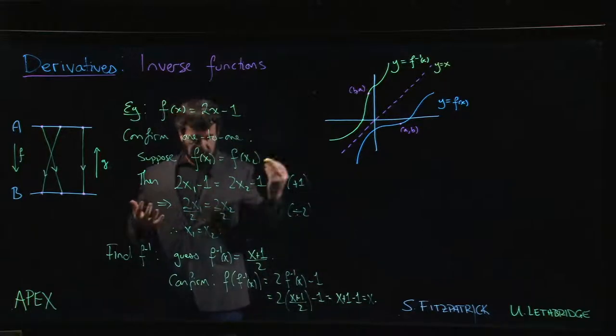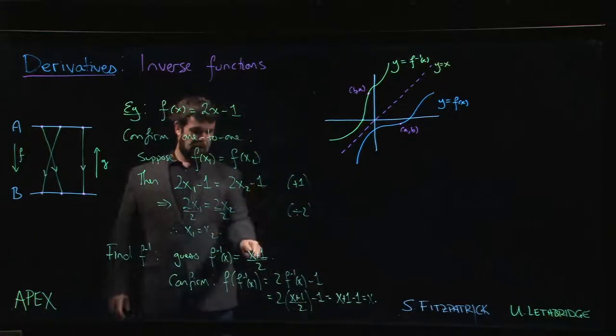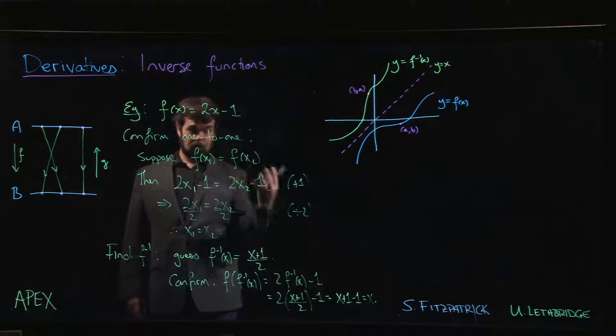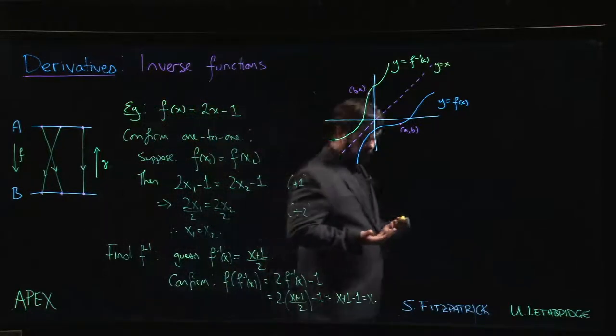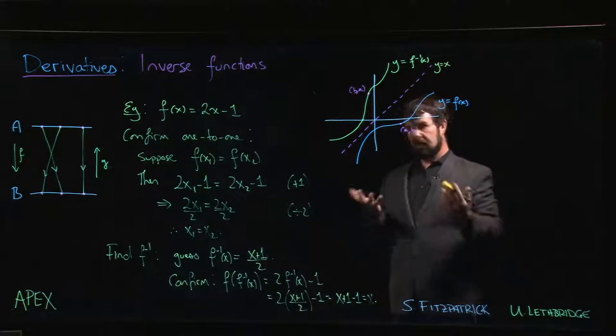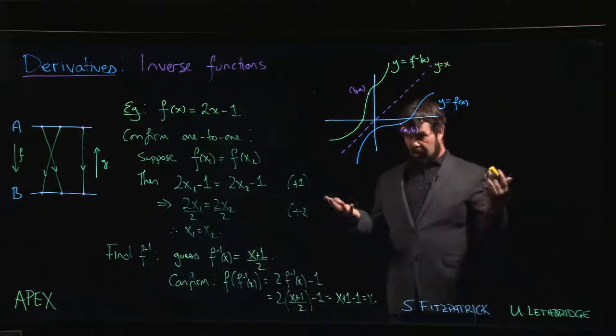And you can confirm that in the other order the same thing happens. If you did f inverse of f of x, if you plug the 2x plus 1 into here, it reduces down to x again. So if you can demonstrate that those cancellation properties hold, that's one way to confirm that you do indeed have the inverse.